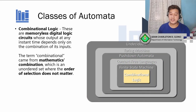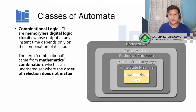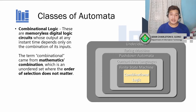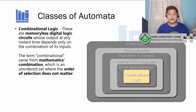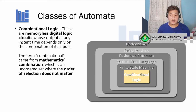The first layer is combinational logic circuits — memoryless digital logic circuits whose output at any instant depends on the combination of its inputs. We already discussed this in digital logic design. The term combination comes from mathematics, meaning an unordered set where the order of selection does not matter. For example, if you need to press six buttons, it doesn't matter if you press them in order one through six or six through one — as long as all six are pressed, that is the combination.